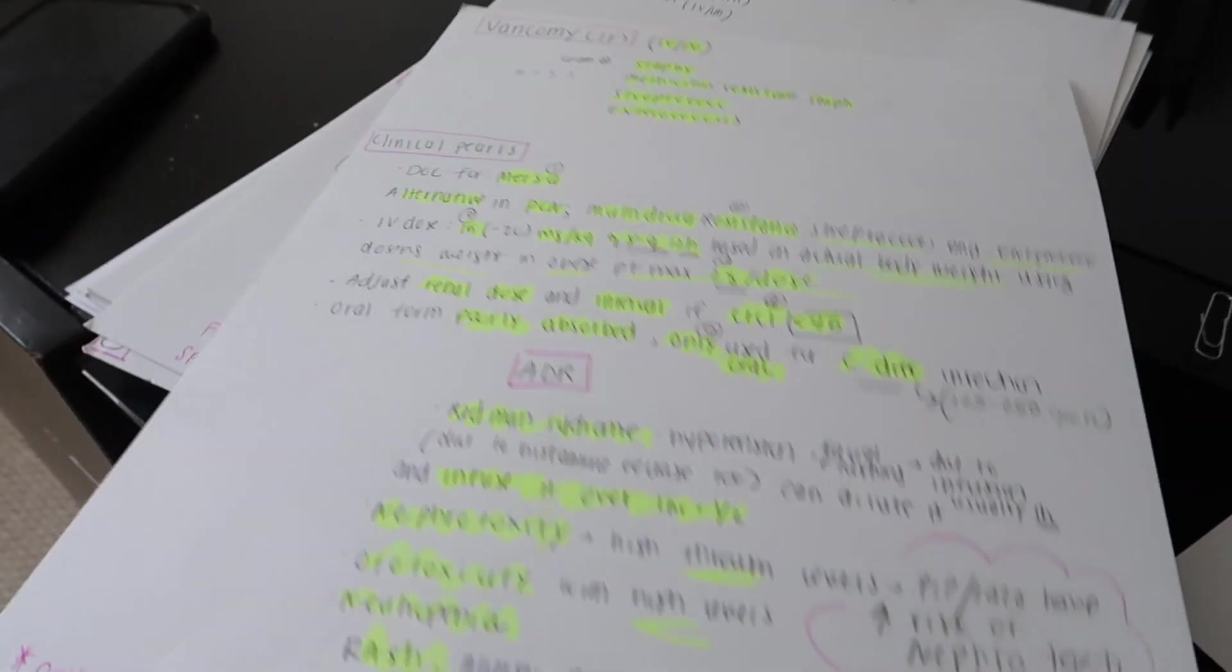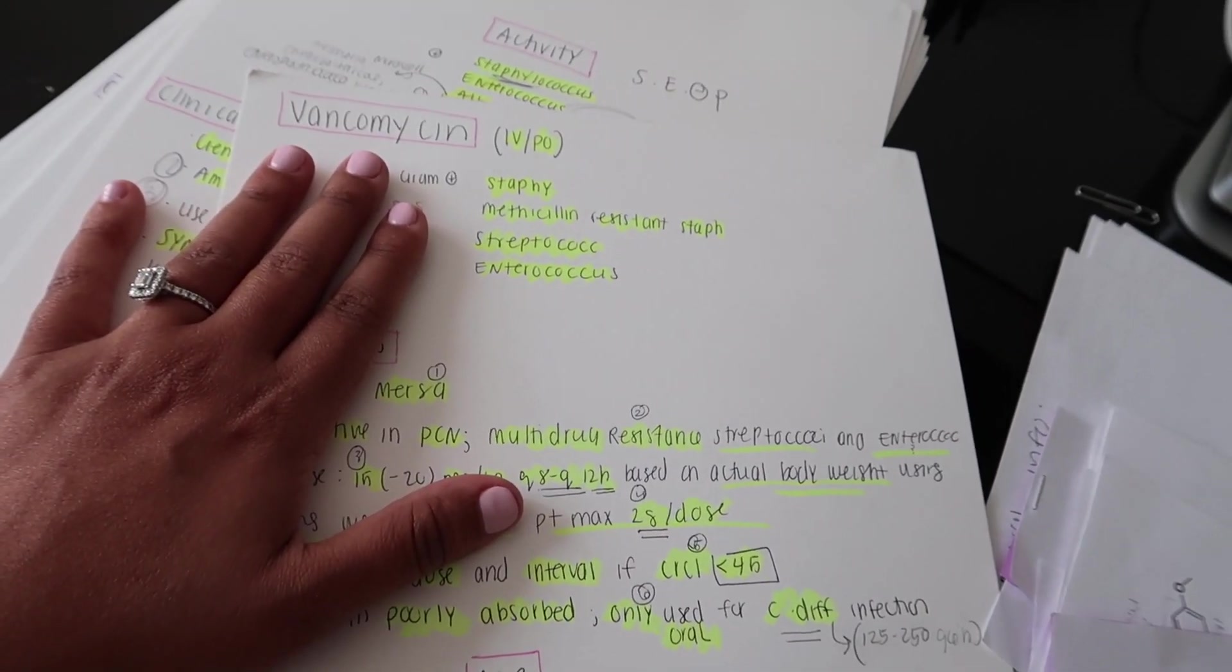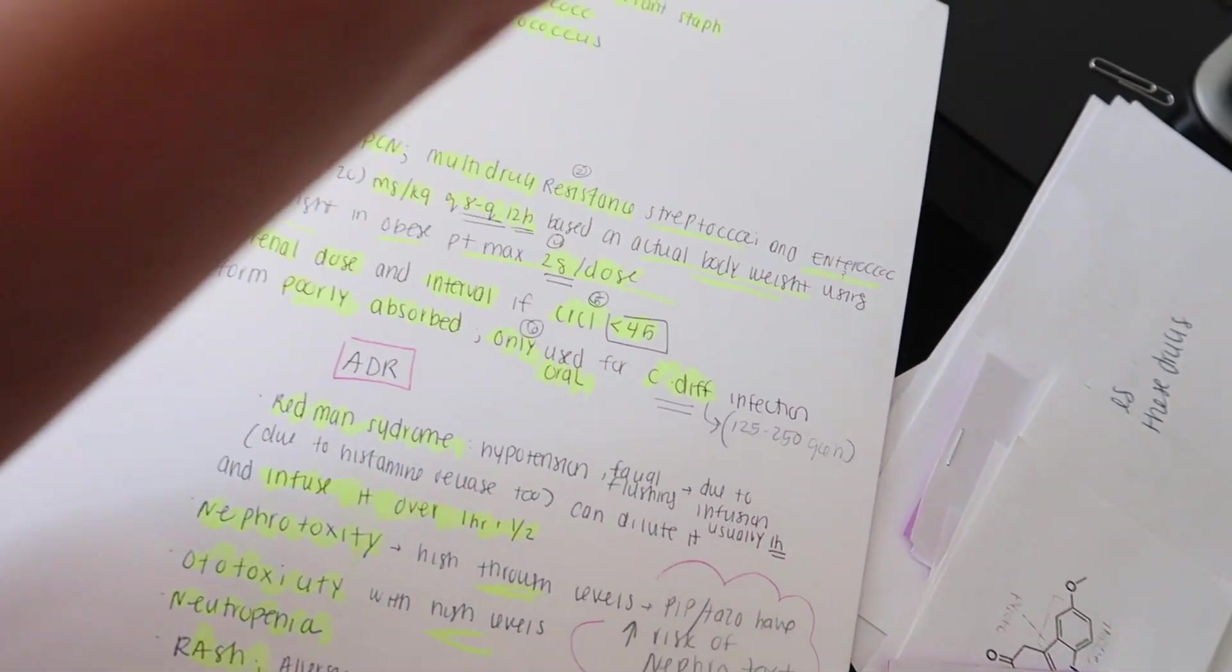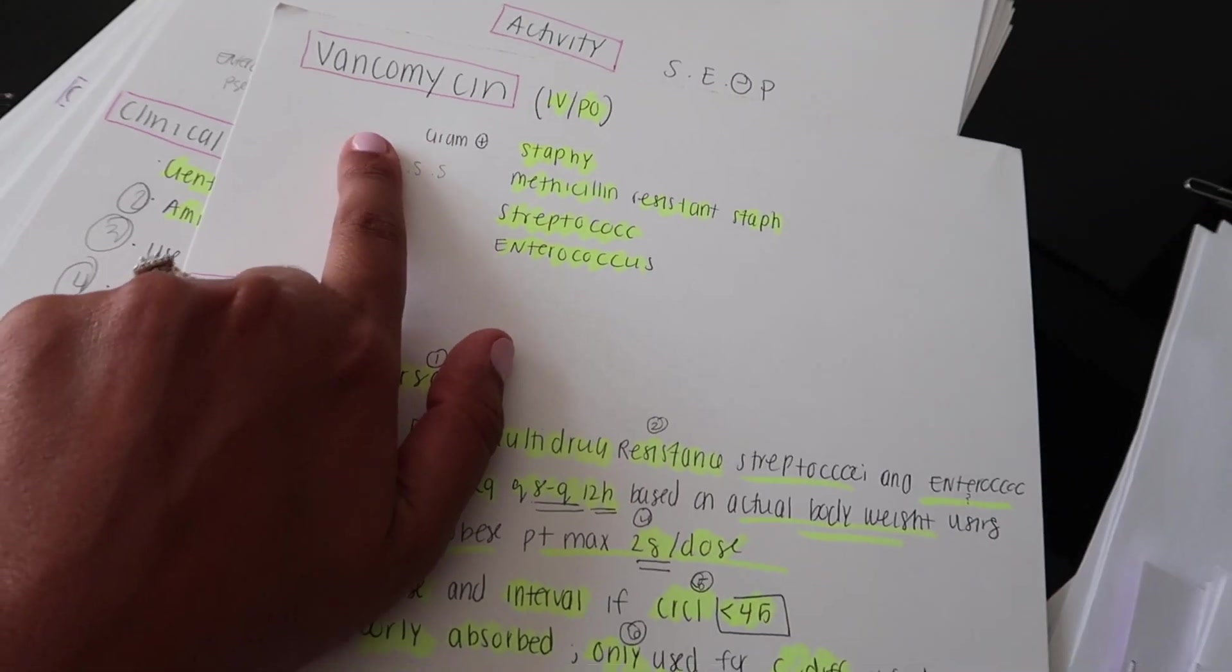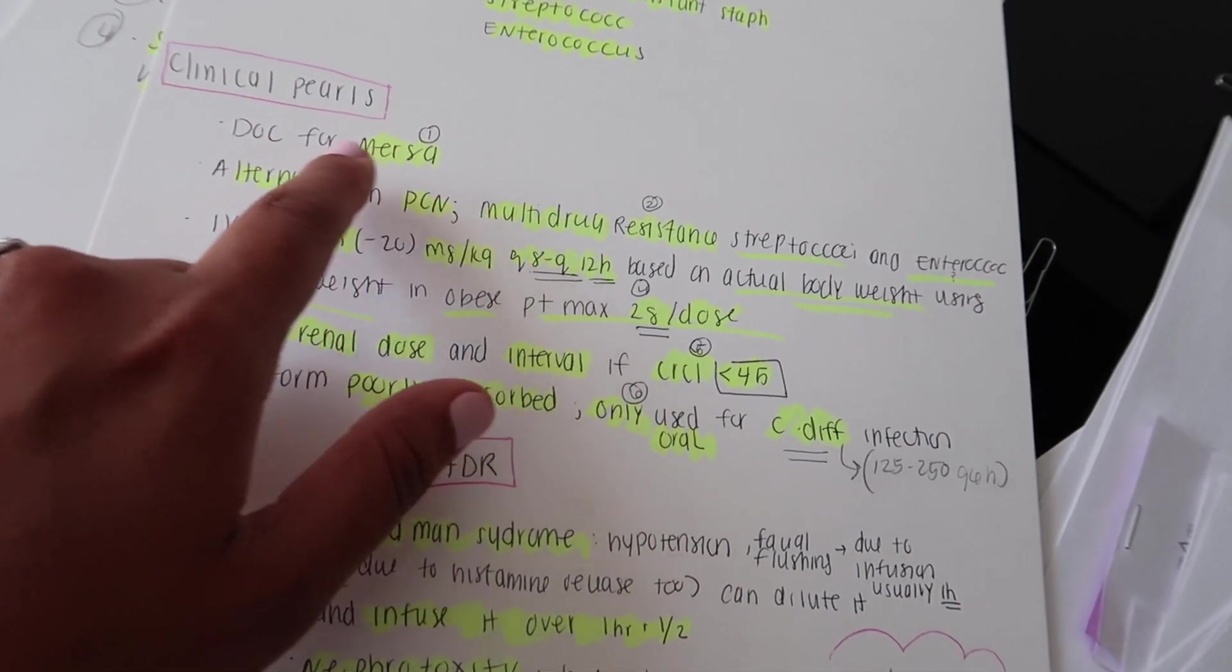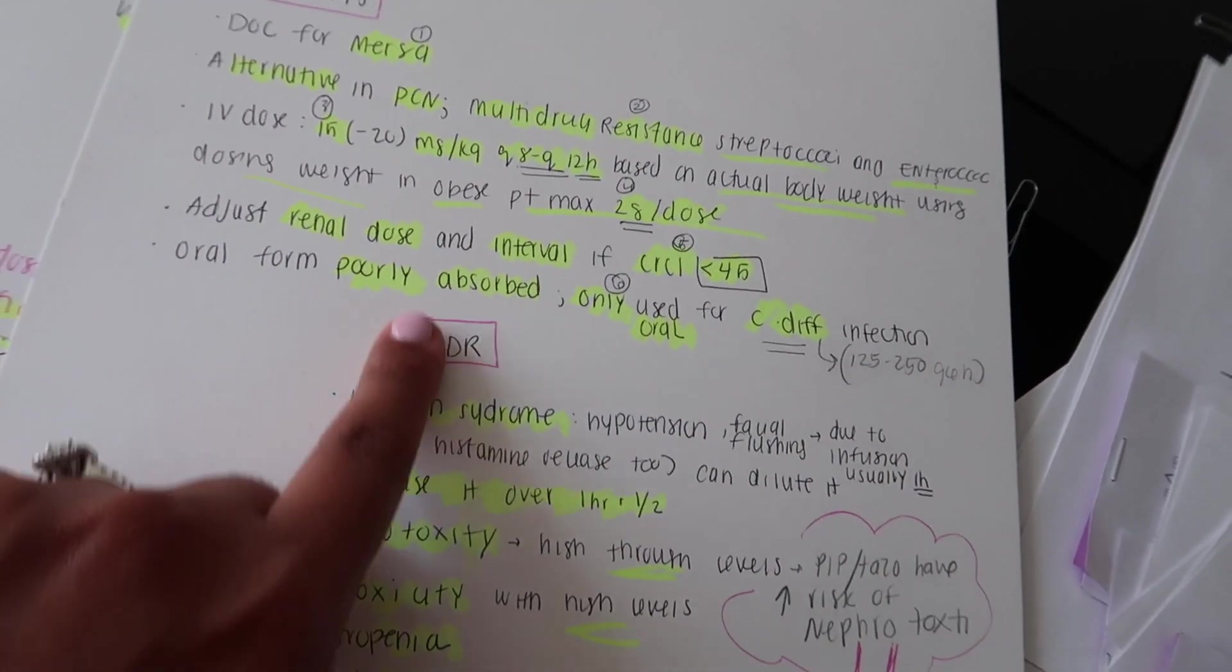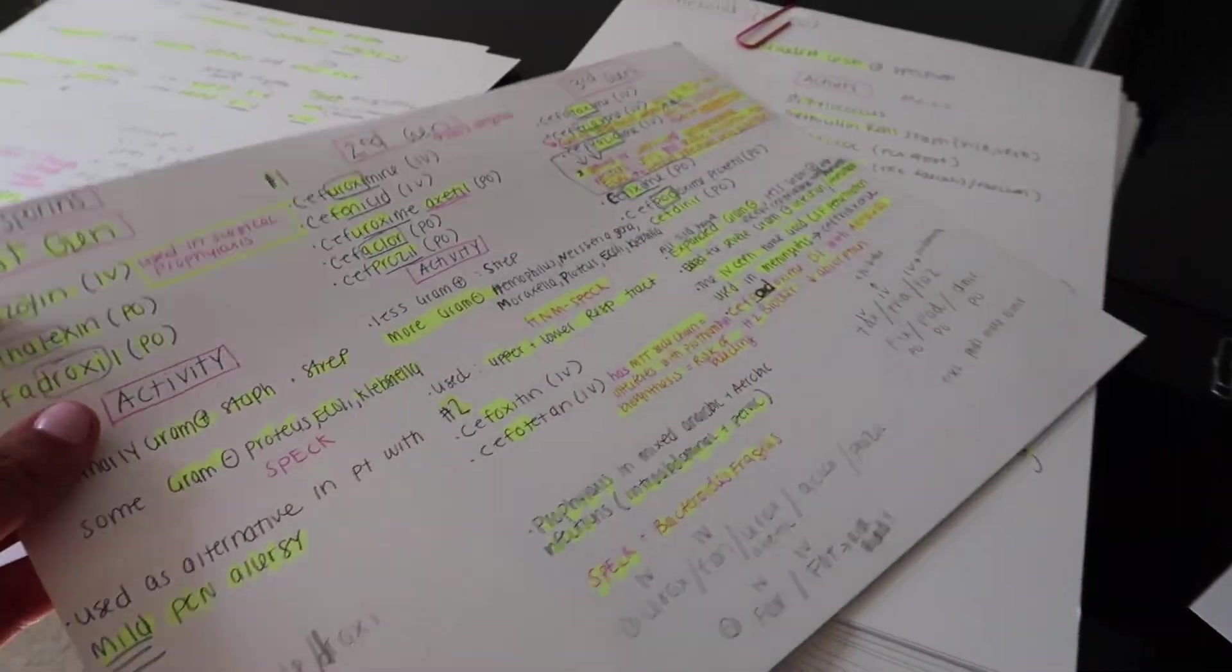We had to know everything, but what I did here—if you like this idea, you're not a flashcard person and you like this card stock idea—I highly recommend buying card stock at Target. What I would do is I would write the drug, like vancomycin. We also had to know the clinical pearls, so I would highlight certain terms so I can remember it, and its adverse drug reactions. Like I said, very important.